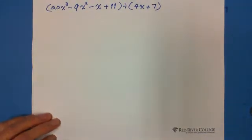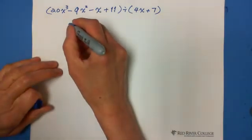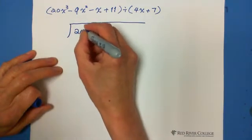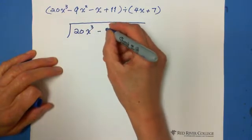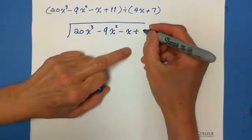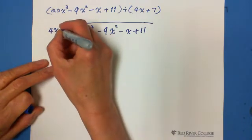20x cubed minus 9x squared minus x plus 11 divided by 4x plus 7. So we write down the question. 20x cubed minus 9x squared minus x plus 11 divided by 4x plus 7.